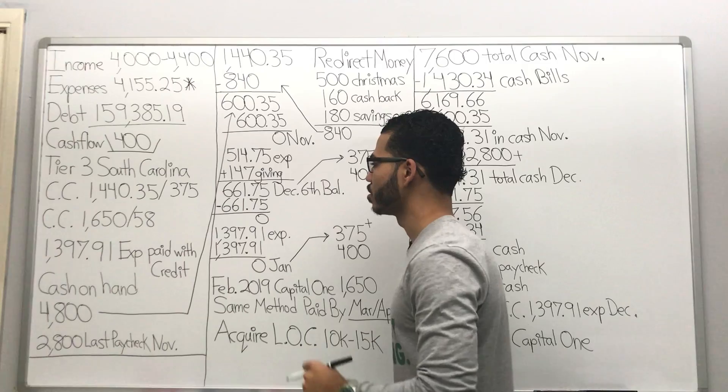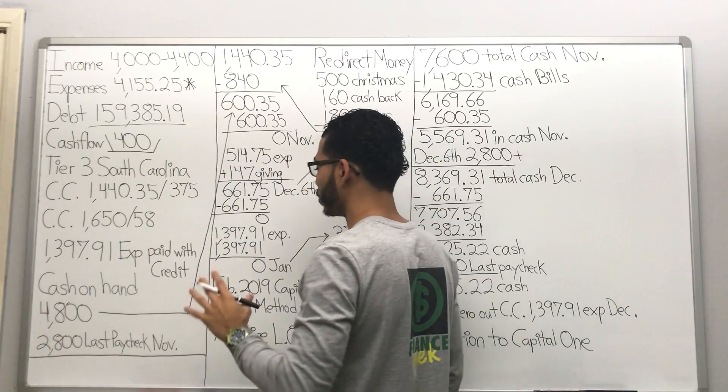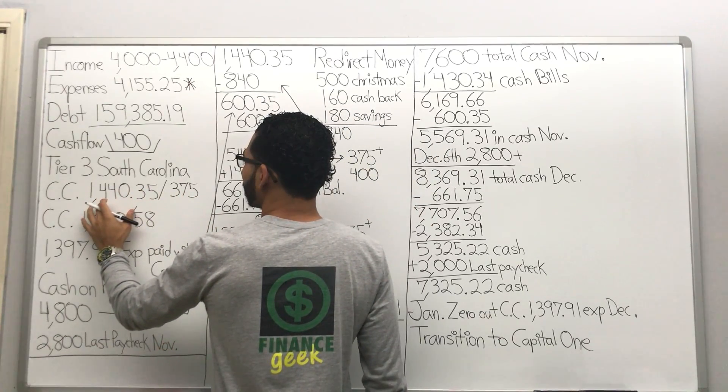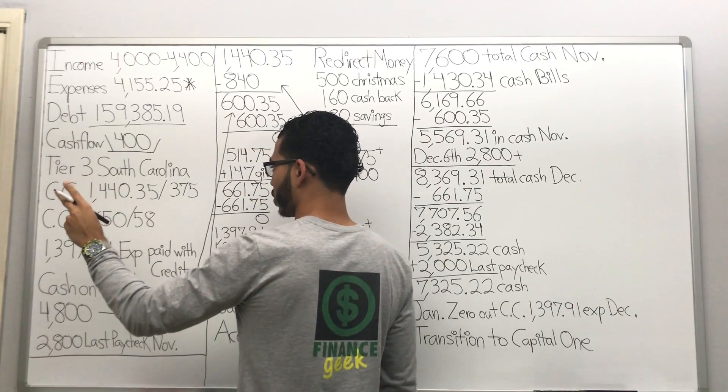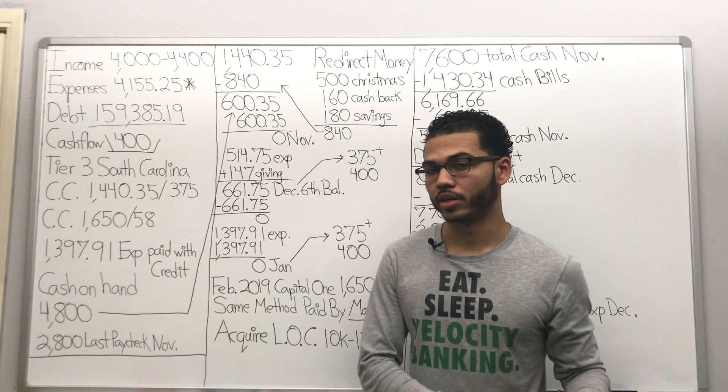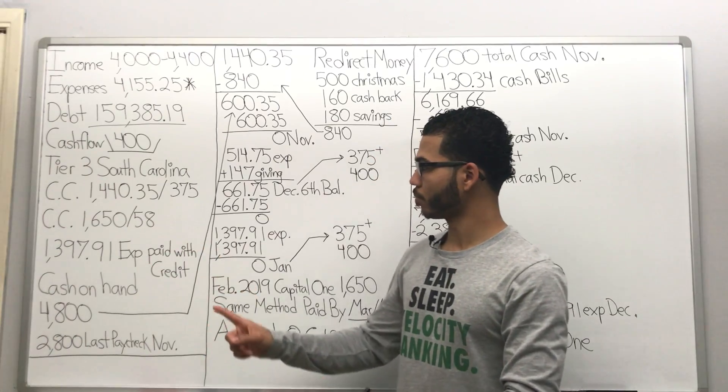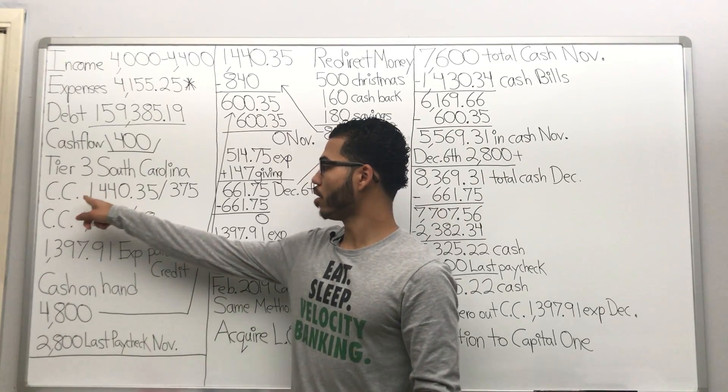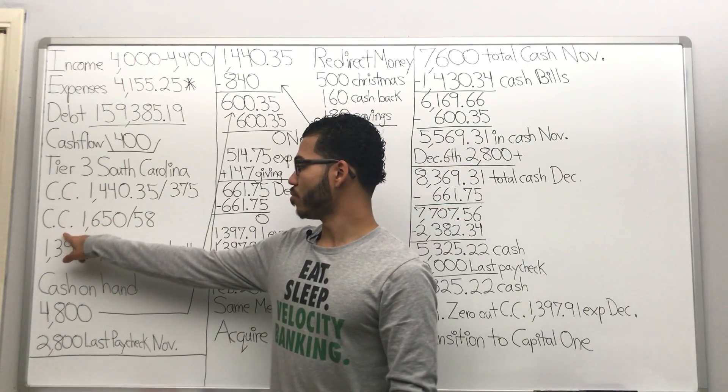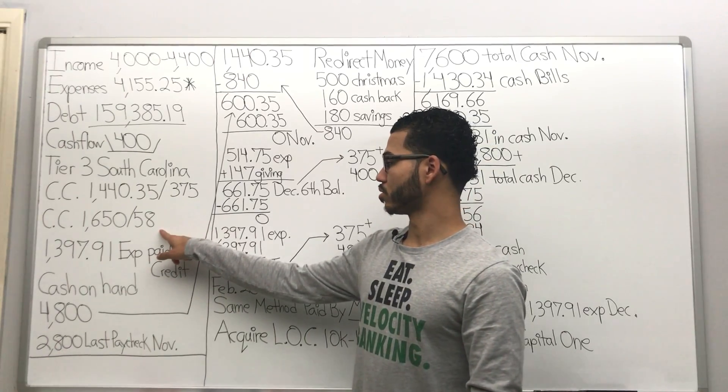So I wanna give you some special numbers to keep in mind throughout this whole entire lesson. We have two credit cards, two debt weapons already. We do not have an unsecured line of credit, so we're gonna work on building our credit. Credit card number one, here's how much I owe, monthly payment $375. Then we have a credit card $1650, monthly payment's $58.